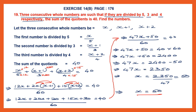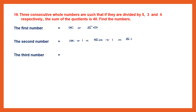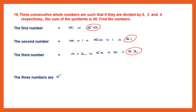We have not finished the answer because we need to find the three numbers: x, x plus 1 and x plus 2. Since x is 50, the first number is 50, the second number is x plus 1 which is 51, and the third number is x plus 2 which is 52. So the three numbers are 50, 51 and 52.